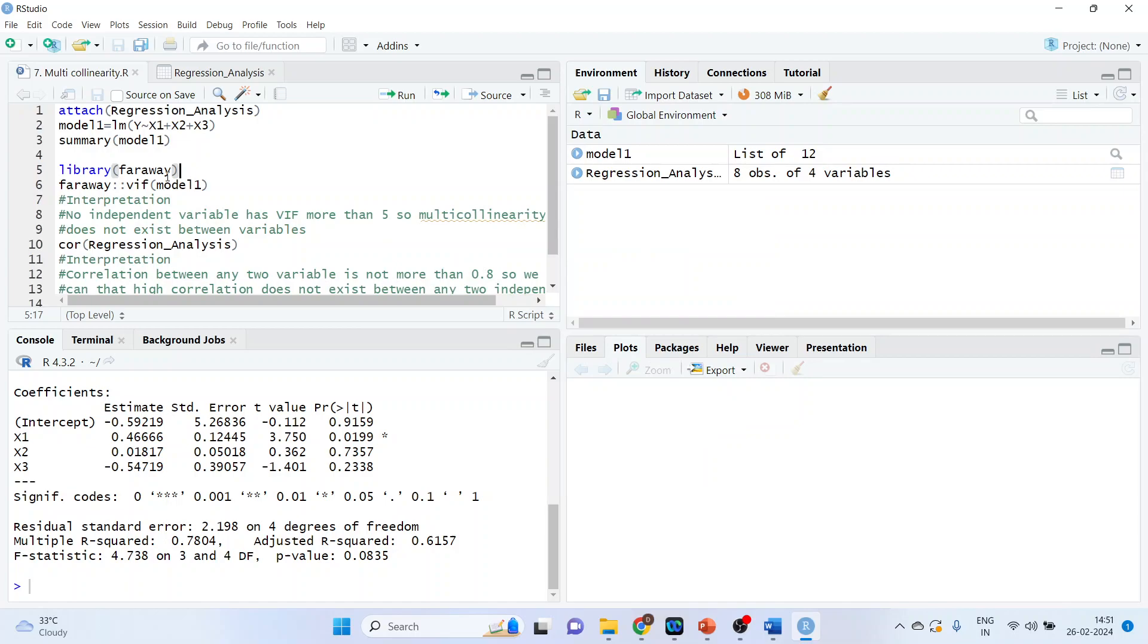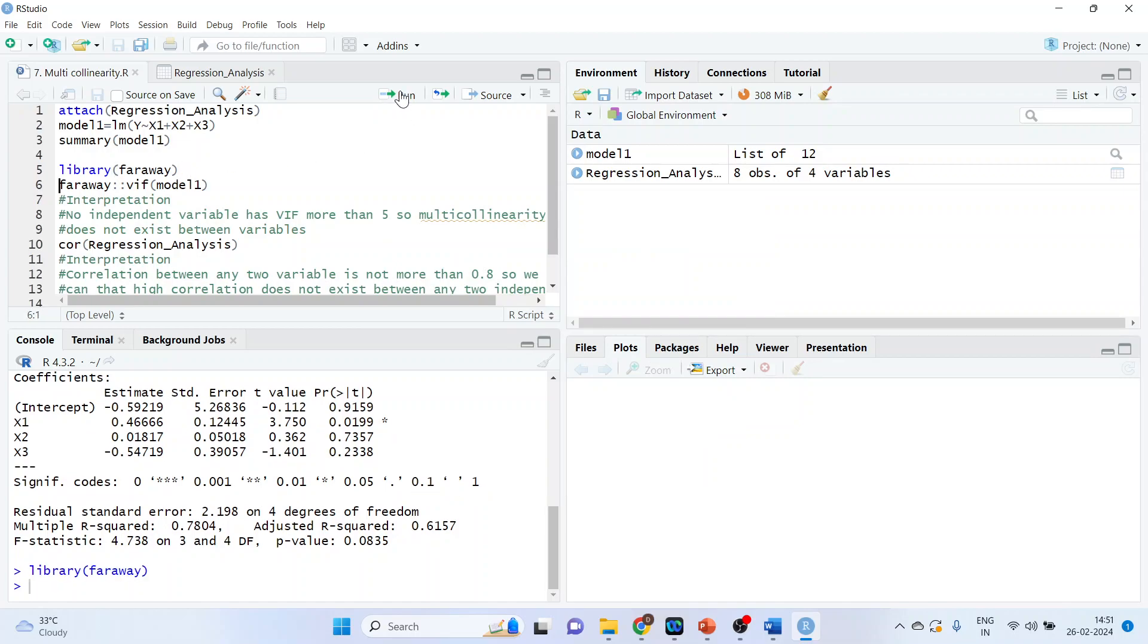And after that activate its library. Library car, run. Now there is the command line: car colon colon VIF, that is variance inflation factor. Model 1, run.